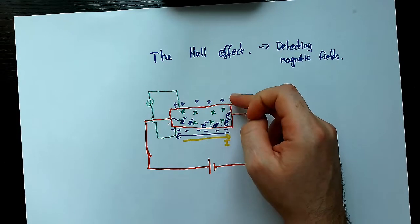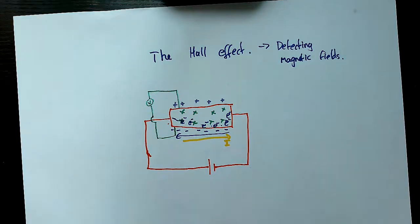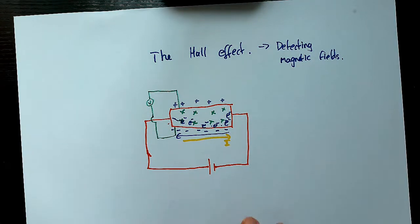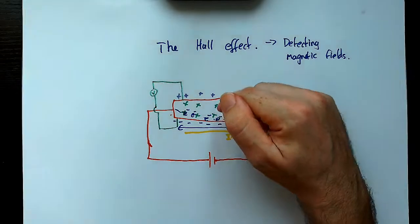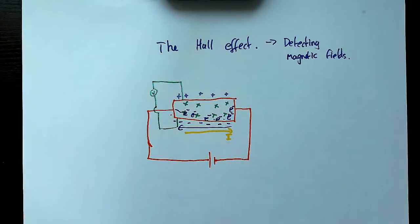The Hall voltage, we'll call this. And then we can use that to indicate the strength of the magnetic field. So a really cool kind of use of magnetic fields to create an electric field either side to allow that to happen.